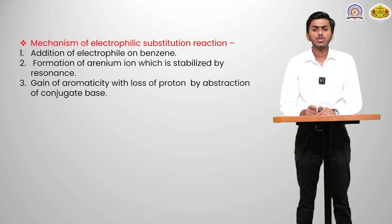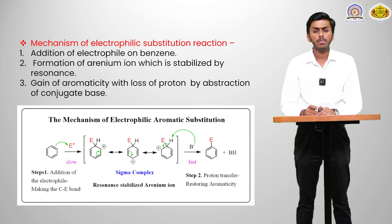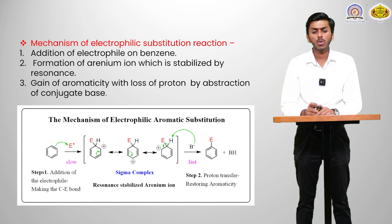The mechanism of electrophilic substitution reaction involves three steps. First is the addition of the electrophile to benzene, forming a C-E bond. The second step involves the formation of an arenium ion (sigma complex), which is stabilized by resonance. Third is the gain of aromaticity with the loss of a proton, which is abstracted by the conjugate base, giving an electrophilically substituted product.